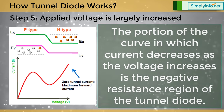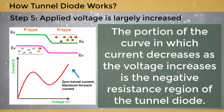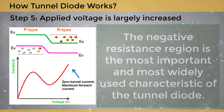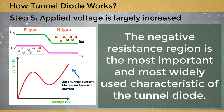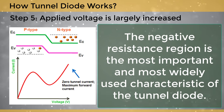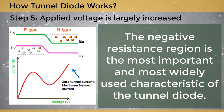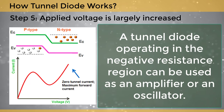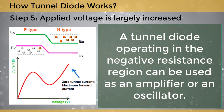The portion of the curve in which current decreases as the voltage increases is the negative resistance region of the tunnel diode. The negative resistance region is the most important and most widely used characteristic of the tunnel diode. A tunnel diode operating in the negative resistance region can be used as an amplifier or an oscillator.